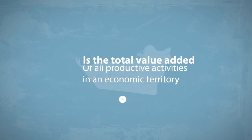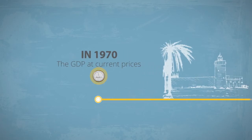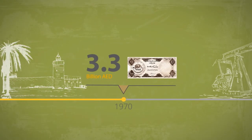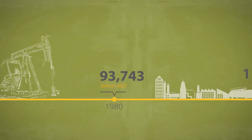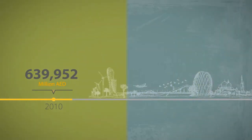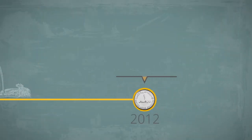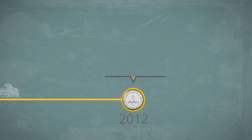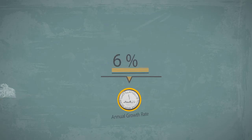In 1970, the GDP at current prices for Abu Dhabi Emirates was 3.3 billion dirhams. With the significant developments and progress made in the Emirates over the last 40 years, the GDP in 2012 exceeds 909 billion dirhams.